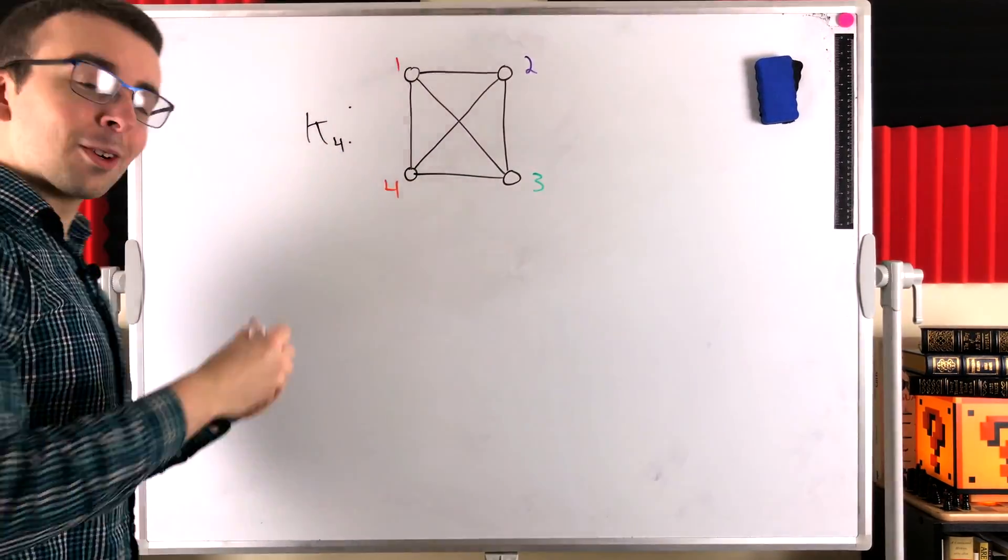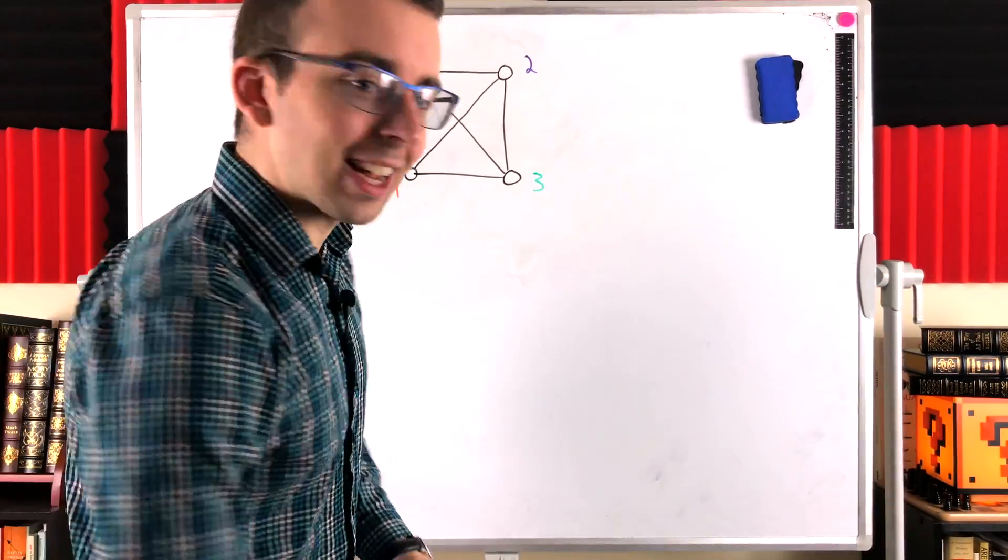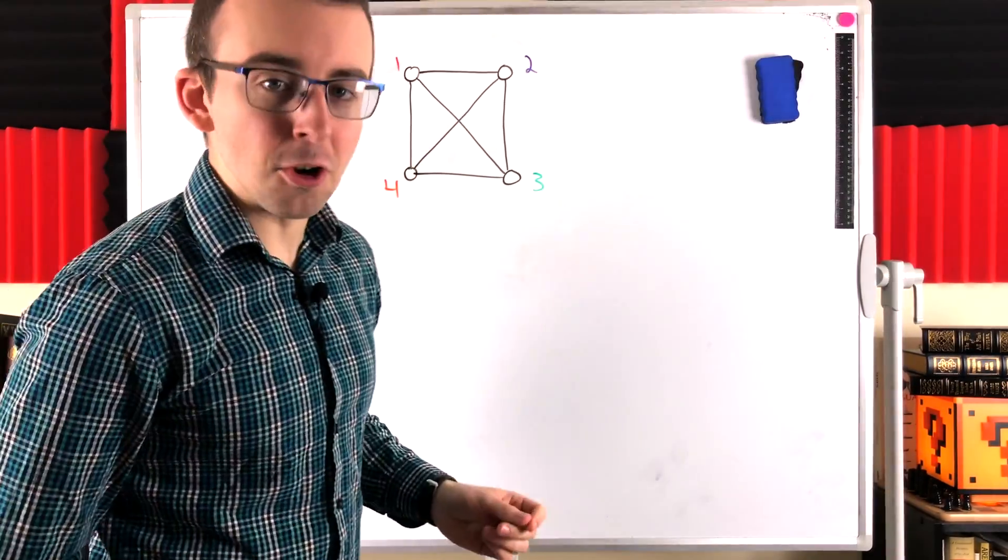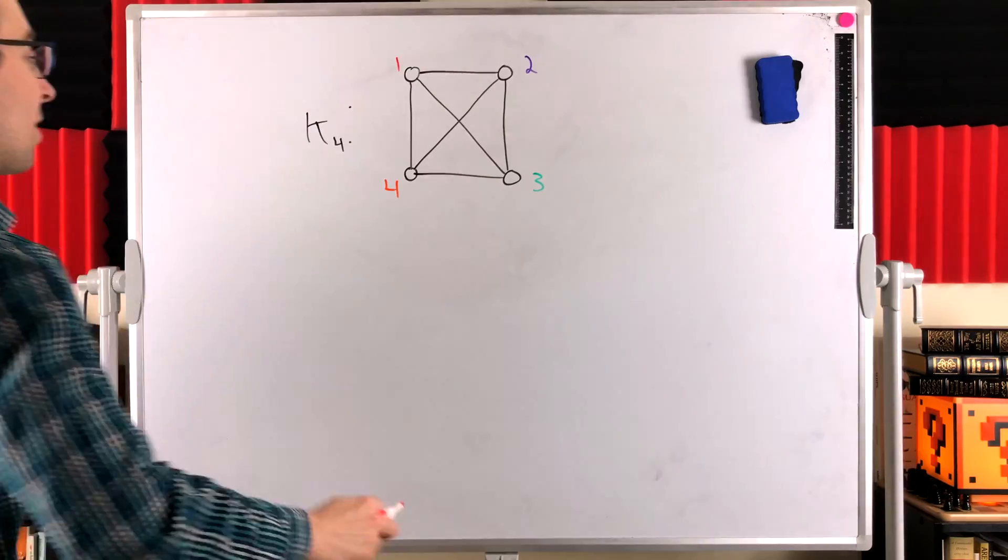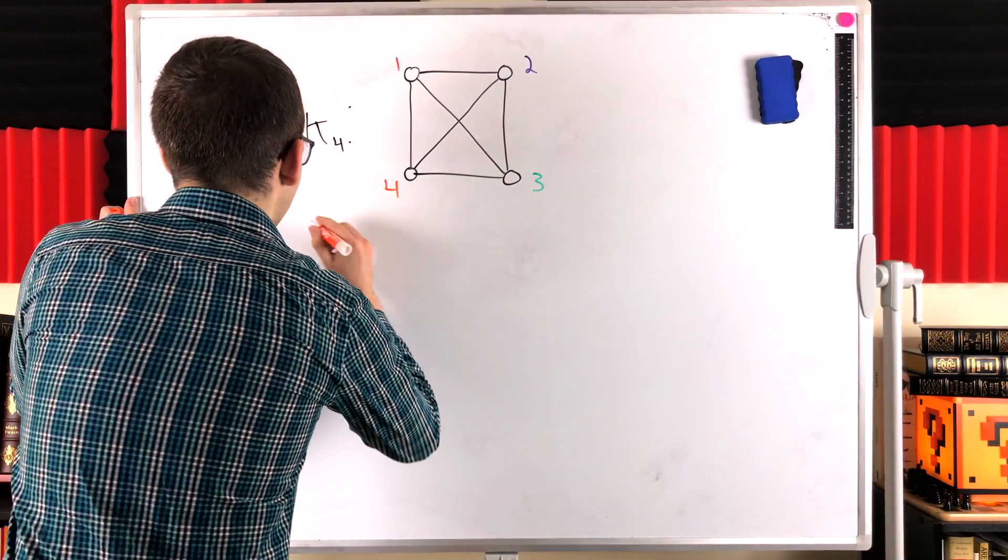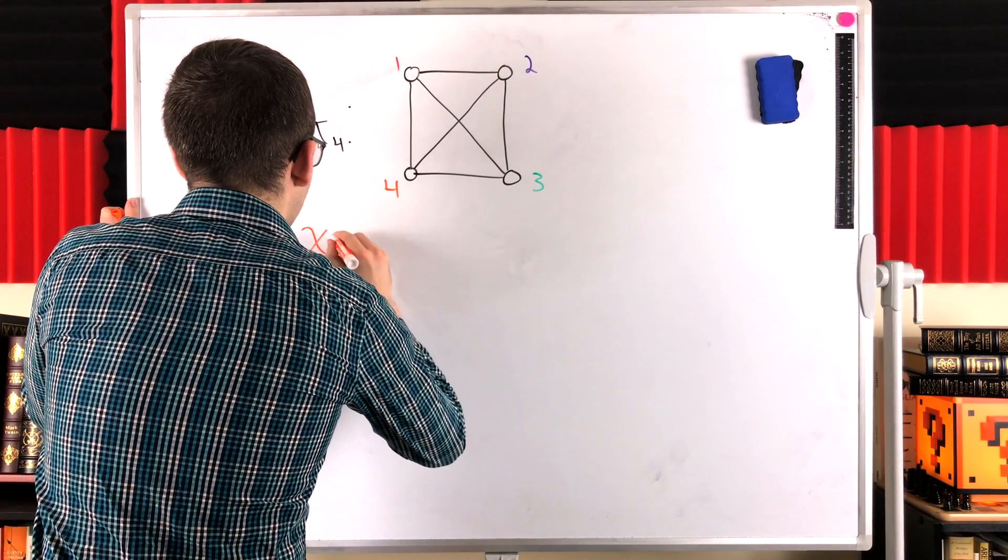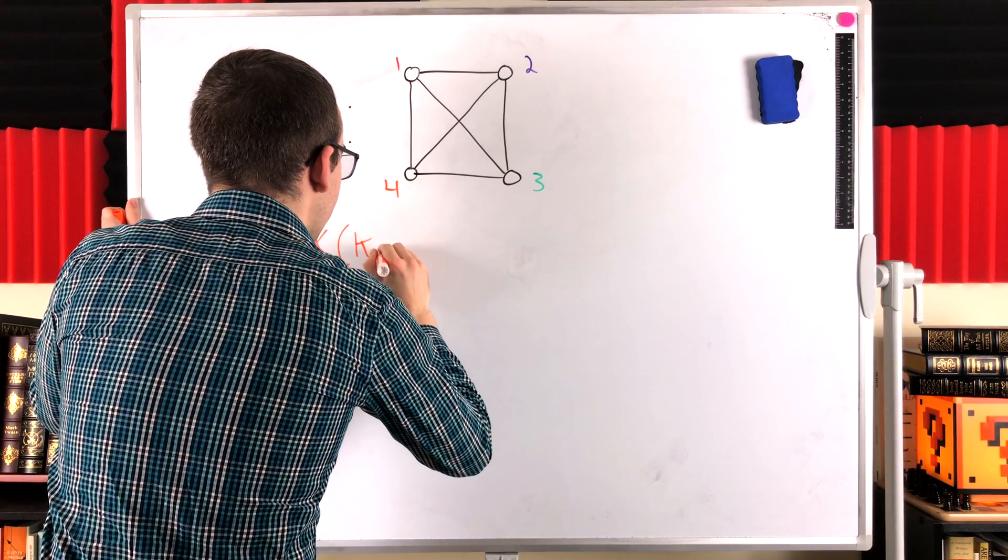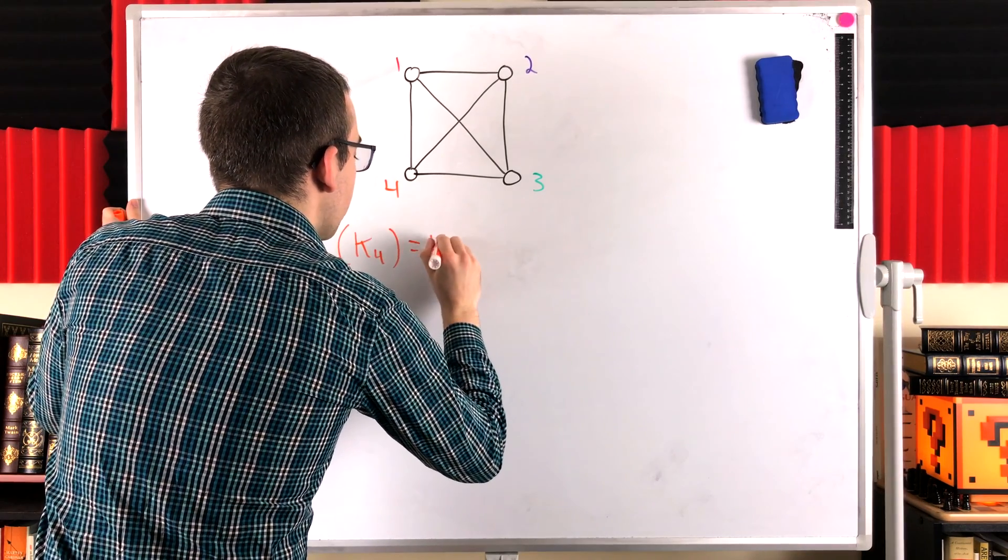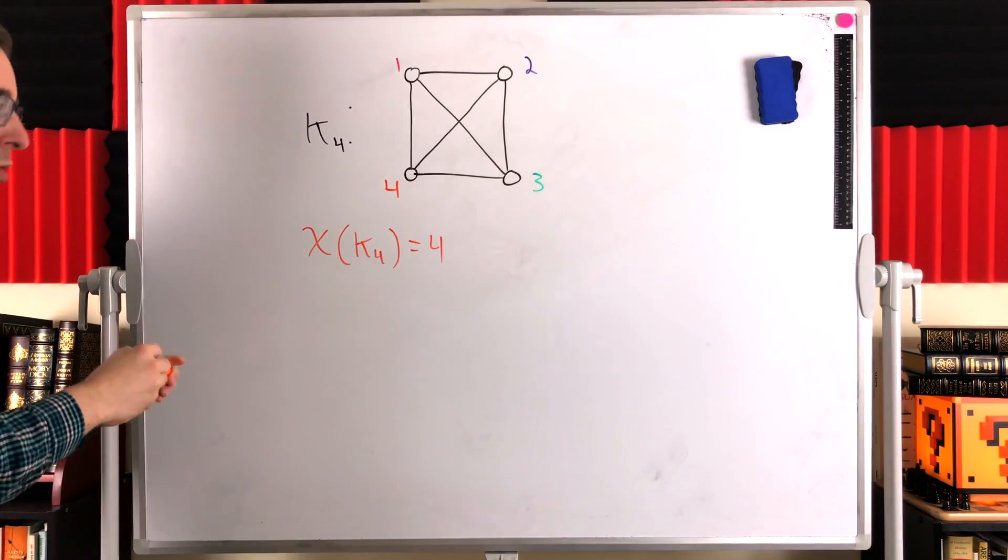And so clearly, every time we go to color a new vertex in a complete graph, we need a new color. The chromatic number of a complete graph on n vertices is n. In this particular case, we see the chromatic number of K4 is certainly going to be equal to four. We need four colors to color the graph.